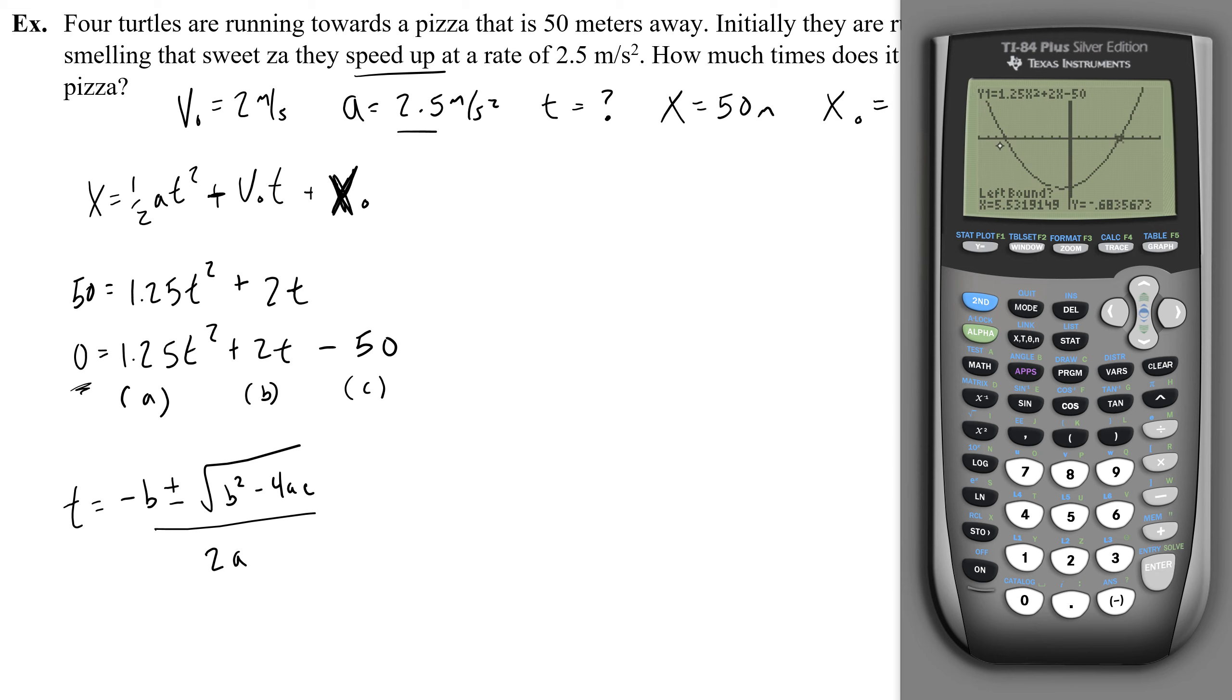Now you have to pick which 0 you want. This 0 here, this would give you a time where they reach the pizza, but in the past, like somehow they started at the pizza in the past. That's not what you want. You want this positive value of time, because that's the real answer that they're going to get to. So I go to the left of where this intersection occurs at 0, then I go to the right, I press enter, and guess, I never guess.